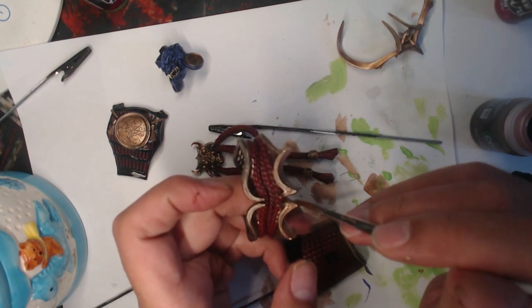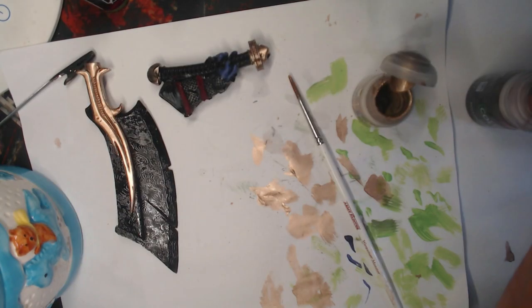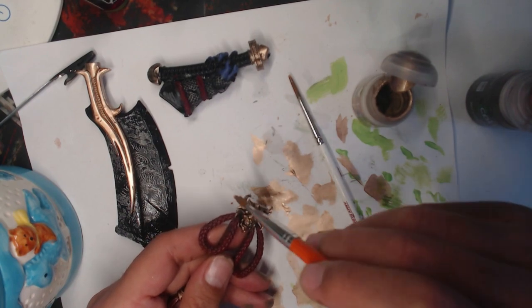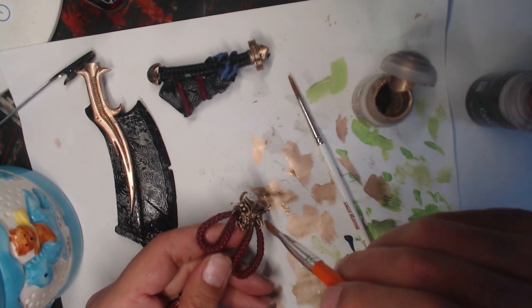Once all the pieces were dry, I gave them all a wash with Citadel Reikland Flesh. This shade needed to be refined in a few places so I went back over with a light dry brush of our bronze.